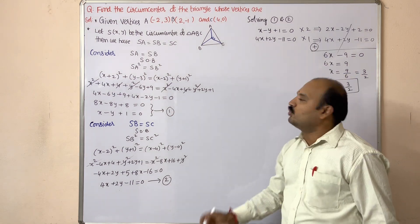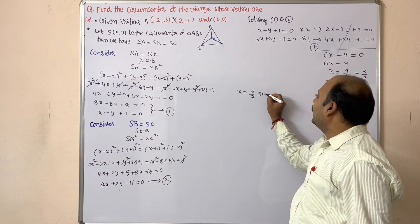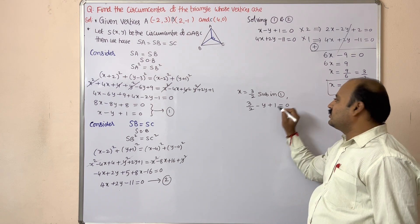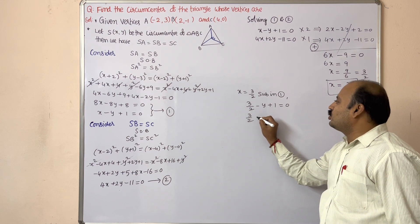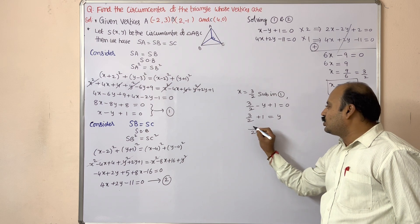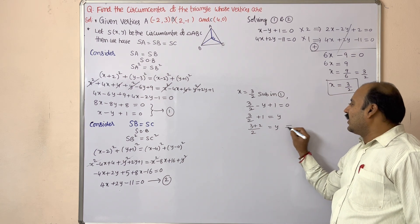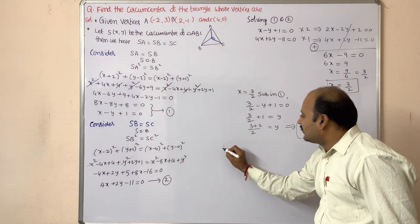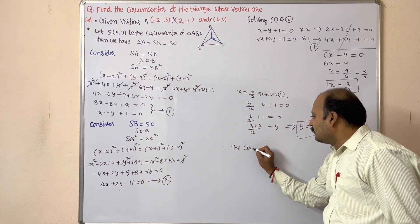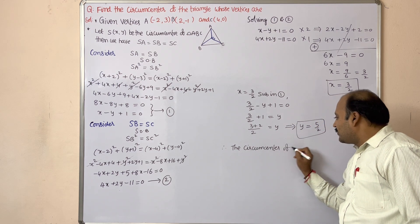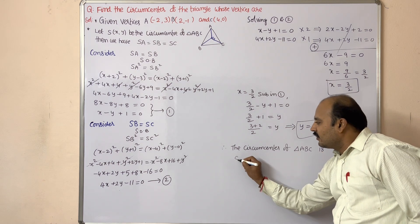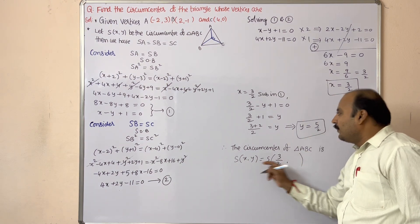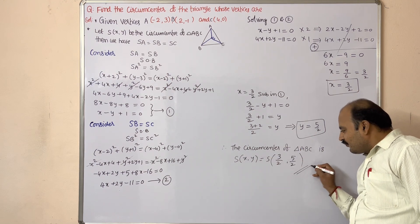Substituting x = 3/2 into Equation 1: 3/2 − y + 1 = 0, so y = 3/2 + 1 = (3 + 2)/2 = 5/2. Therefore the circumcenter of triangle ABC is S(x, y) = (3/2, 5/2).